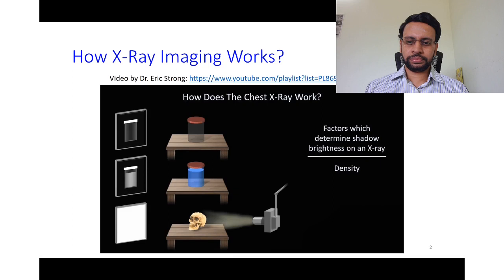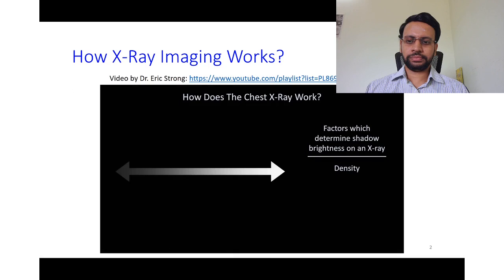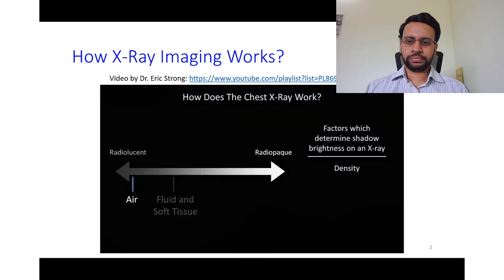In summary, there is a spectrum of radio-densities. Materials that allow most X-rays through are called radiolucent and appear black or near black on X-ray. Those that block most X-rays are called radio-opaque and appear white. For medical X-rays there are essentially four classes of material: air (most radiolucent), then fluid and soft tissue, then bone, and finally metal.